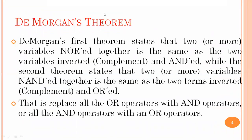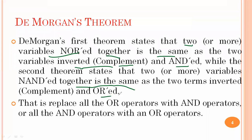The first theorem states that two or more variables ANDed together and then negated is the same as the two variables individually inverted — their complements taken — and then ORed together. The second theorem states that two or more variables ORed together and then negated is the same as the two terms individually inverted and then ANDed together. Now let's move to the diagram.